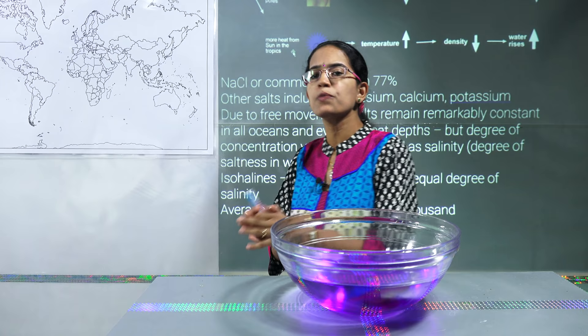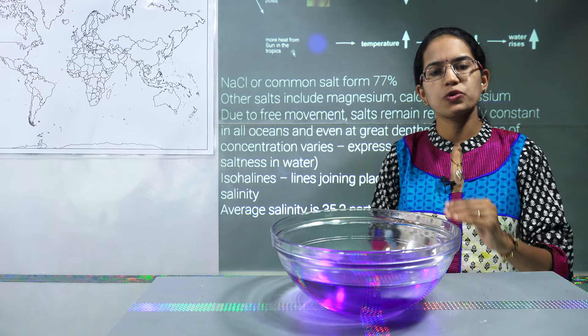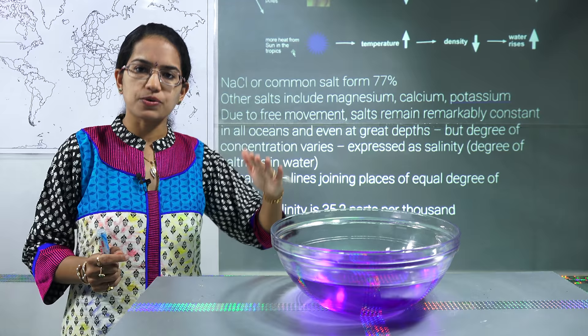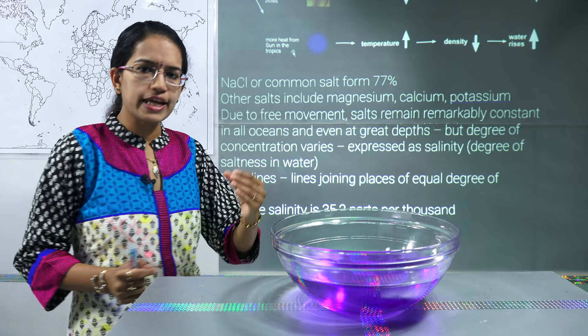The lines that join places of equal salinity are known as isohalines. Similarly, you have isobaths, which refer to the same depth. So 'iso' means equal — isohaline means lines joining equal salinity. Again, salinity varies and is governed by numerous factors.